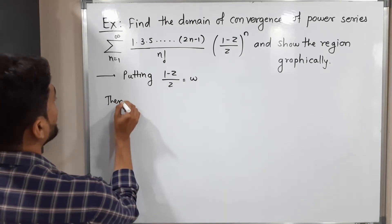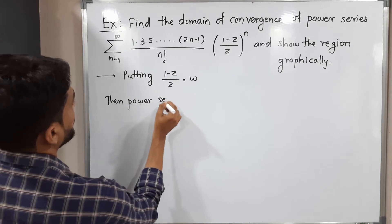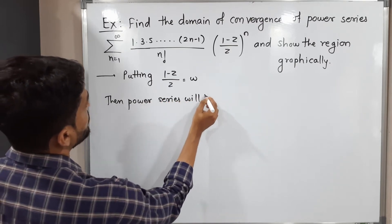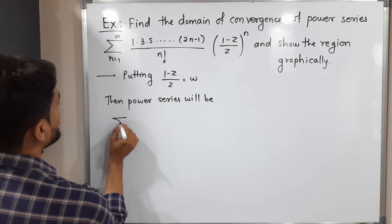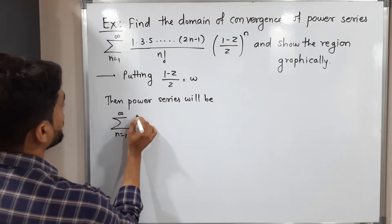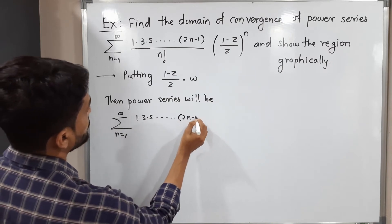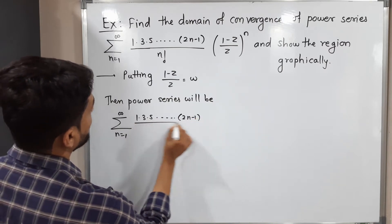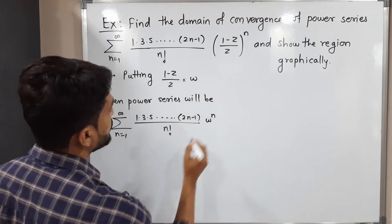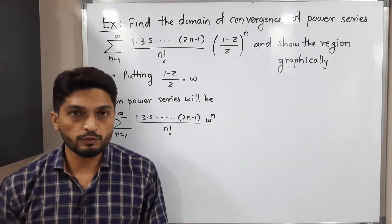Then the power series will look like: summation n running from 1 to infinity of 1 times 3 times 5 and so on to (2n minus 1), divided by n factorial, times w raised to n. Now it looks better.